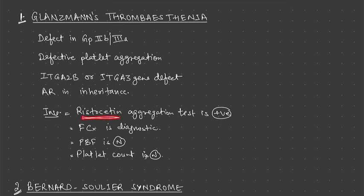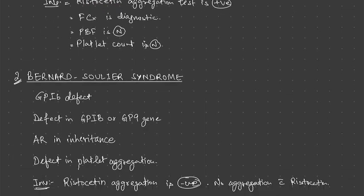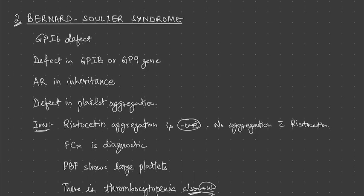Second is Bernard-Soulier syndrome. It involves a GP1B defect — also a receptor helpful in platelet aggregation — so there will be a platelet aggregation defect similar to Glanzmann's thrombasthenia, but the receptor involved is different. Inheritance is the same: autosomal recessive. The gene involved is GP1B or GP9.